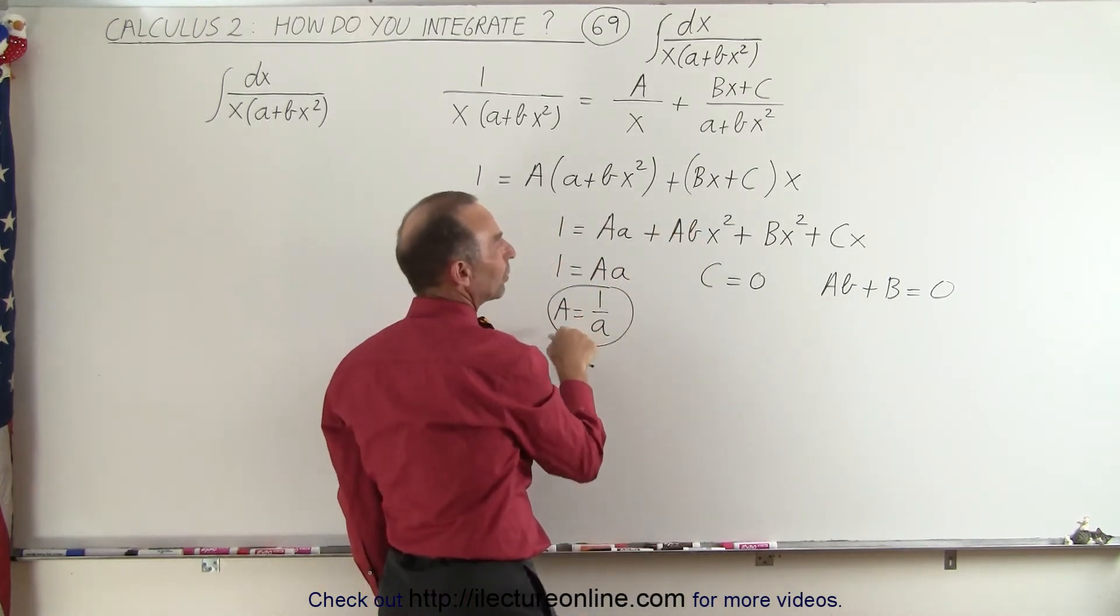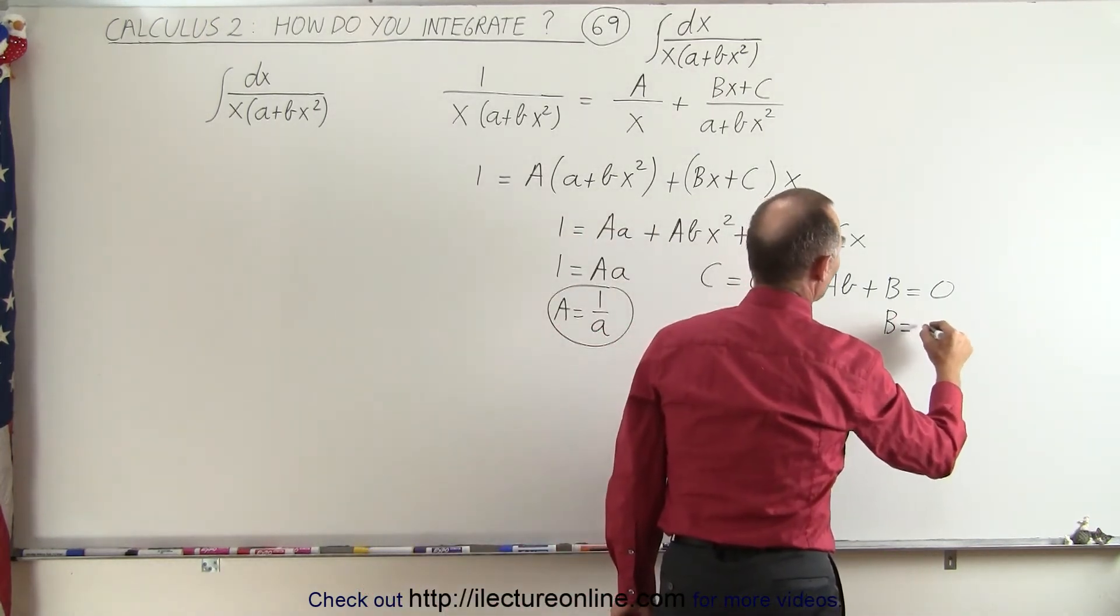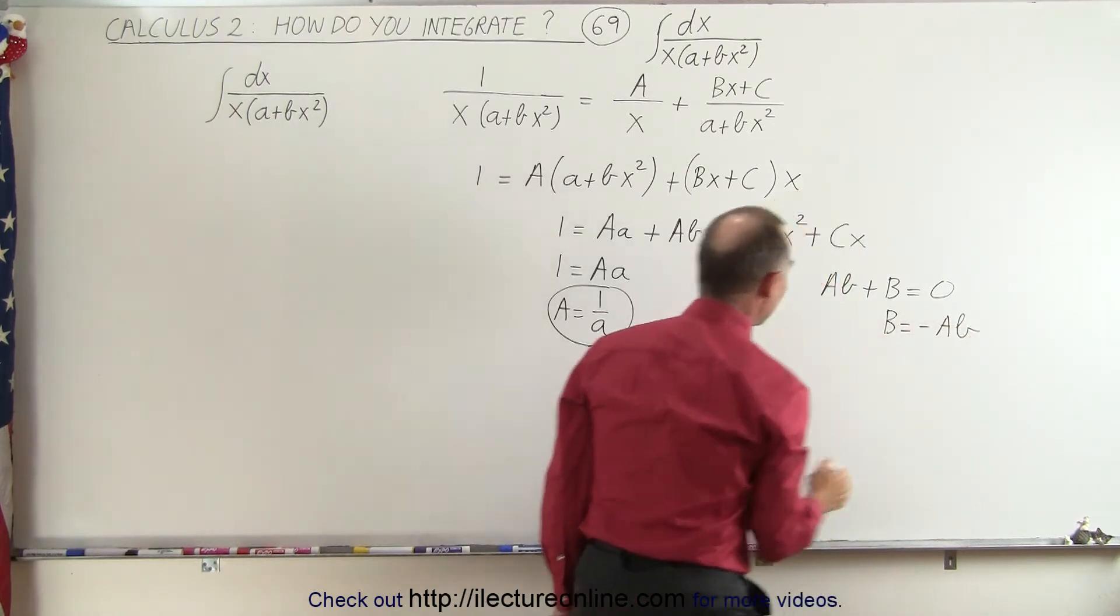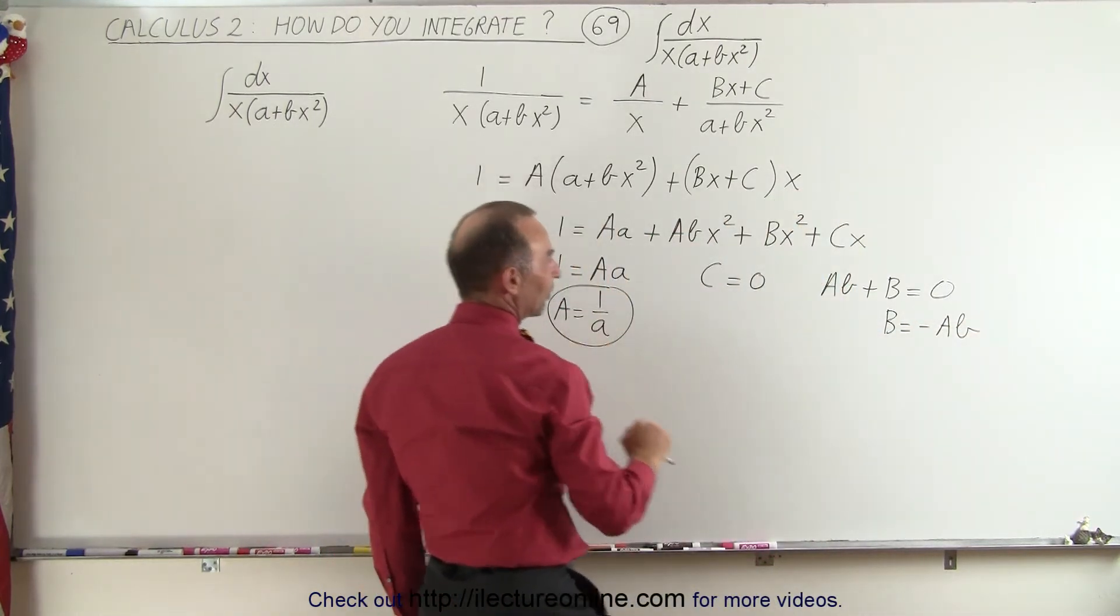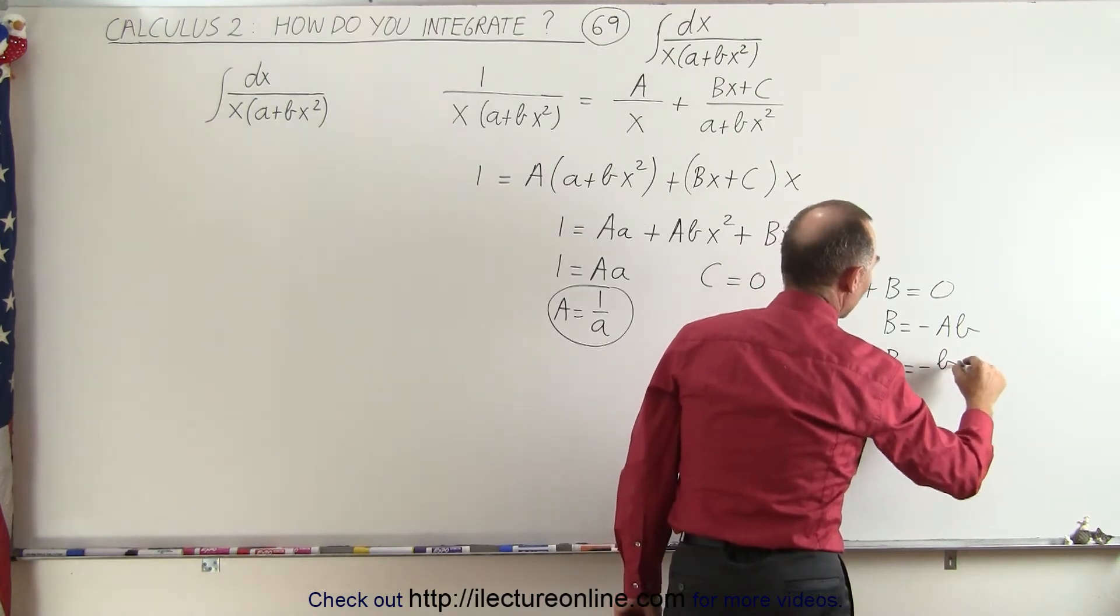And we know what a is equal to, so we can say that b is equal to minus a times b. And then substitute 1 over a for a, so we have b is equal to minus b over a.